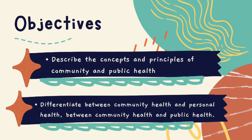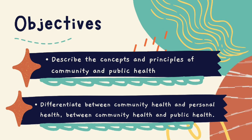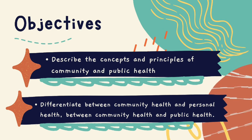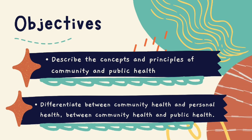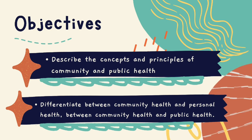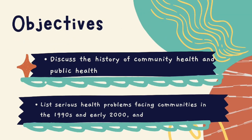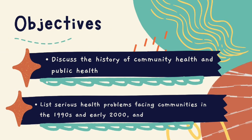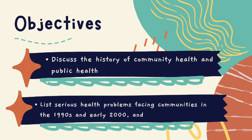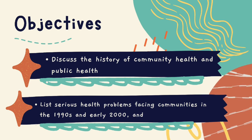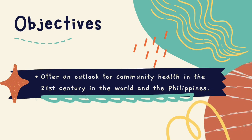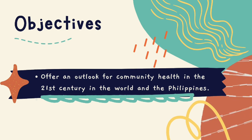Thus, we have the following objectives. First is to describe the concepts and principles of community and public health. Second is to differentiate between community health and personal health, and between community health and public health. Next is to discuss the history of community health and public health. Next is to list the serious health problems facing communities in the 1990s and early 2000s. And lastly, to offer an outlook for community health in the 21st century in the world and the Philippines.